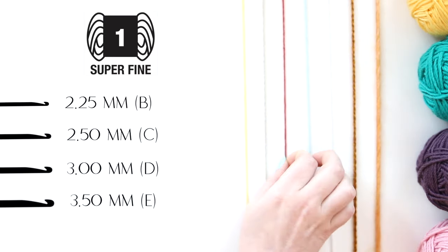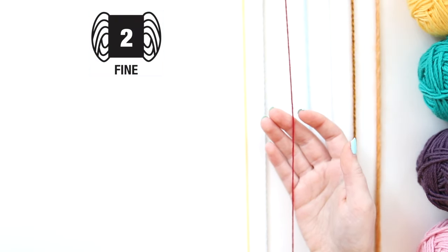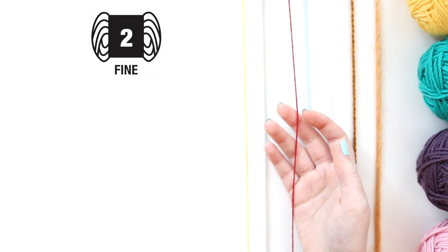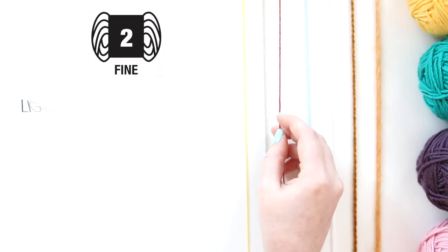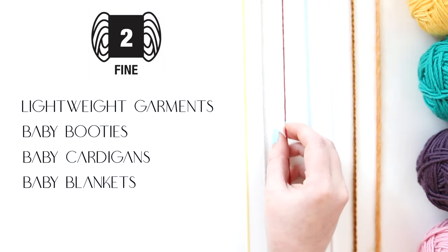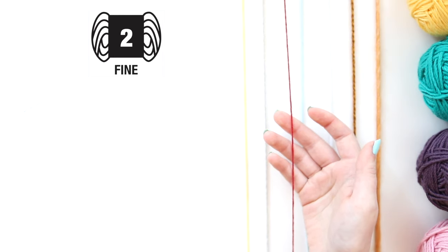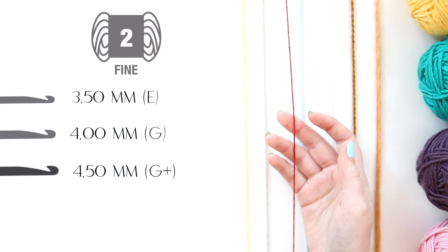Next up, we're going to a weight two yarn, also known as fine, sport, and baby yarn. This is a very versatile yarn that starts to get a little easier to work with than the thinner lace yarns. It's more often used for very thin, lightweight garments as well as baby items such as booties, cardigans, and blankets. Its general recommended hook size is a 3.5mm, a 4mm, and a 4.5mm.